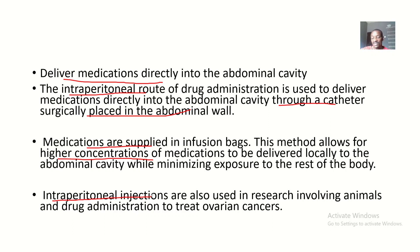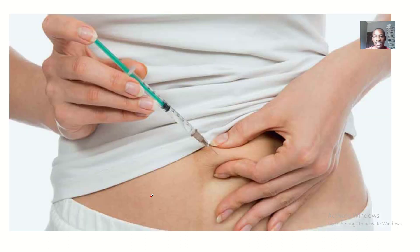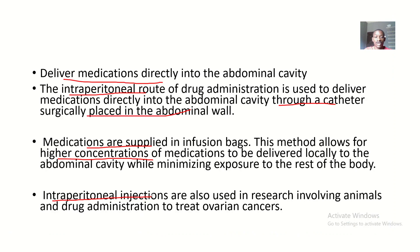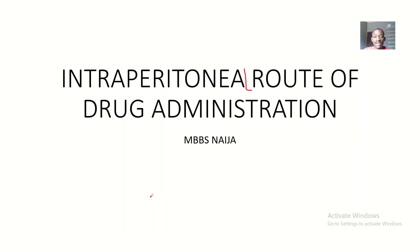By using what? A syringe or a catheter that was surgically placed. This is still another picture showing the intraperitoneal route of drug administration. So guys, this is it about the intraperitoneal route of drug administration. I think this will be the last video we'll be doing on the route of drug administration — this should be like the 15th one.